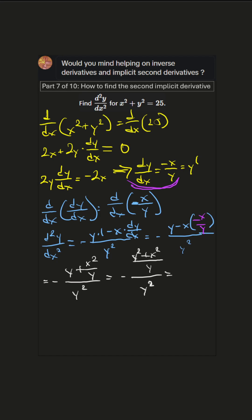And now notice that we are given that x² plus y² equals 25. So we can use that. We could say 25 over y over y².